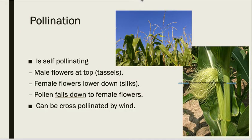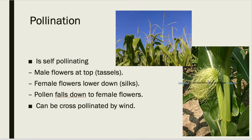Pollination in maize is unusual in that it is self-pollinating, or at least it can be. At the top of the plant we have the male part, called the tassels, and further down along the stem you have the female part, called the silk. Pollination involves pollen falling from the male part down onto the female part. It can also happen from one plant to another when pollen travels on the wind, so it can be cross-pollinating as well.